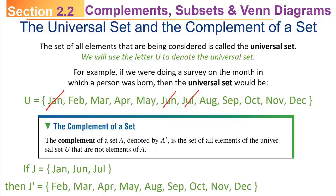They happen to be the months that start with the letter J. So the set J complement is a set containing February, March, April, May, August, September, October, November, December.